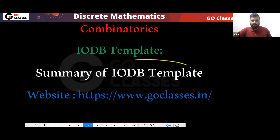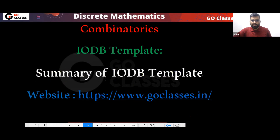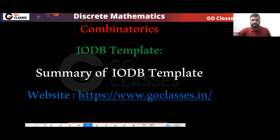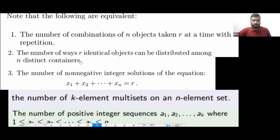In the last class we already saw the IODB template. This is very important. We saw all the variations and all the questions. There are six problems which are similar to each other — total six problems we have seen which are similar to each other.